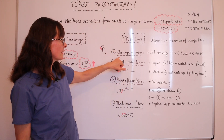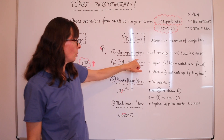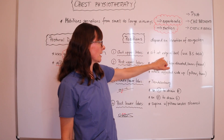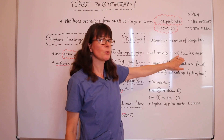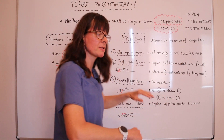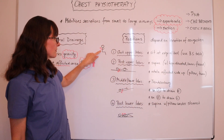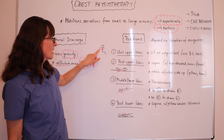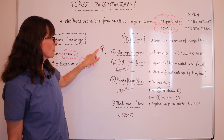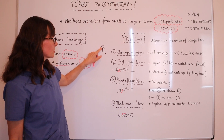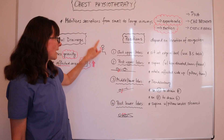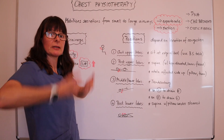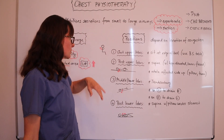If the congestion is in the anterior upper lobes, we simply ask the patient to sit at the edge of the bed and maybe use a bedside table to prop themselves up. So now we have those anterior upper lobes in the front, and we always want to move the secretions up so that they can expectorate them — not sinking down into the lower segments of the lungs.